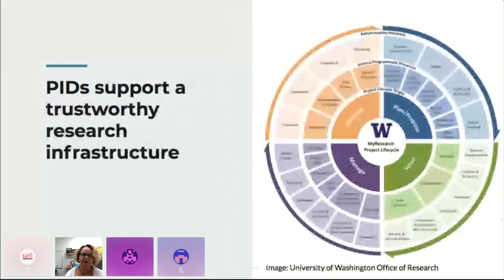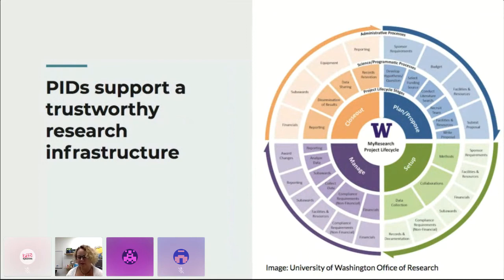PIDs also support a trustworthy research infrastructure. If you click a link and it resolves to 'page not found,' that's frustrating on the web generally, but in the context of research it's actually quite disastrous — you've cited something and somebody can't find it anymore. Maybe you've said 'I found the cure to cancer, here's the link to my data,' and someone clicks it and gets 'page not found.' That's detrimental — you can't trust what was said in the paper. PIDs enable trustworthiness by allowing things to be persistently resolved, which is critical for trusted research infrastructure.